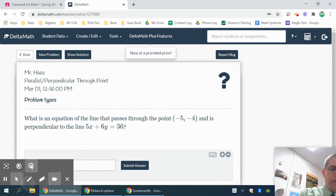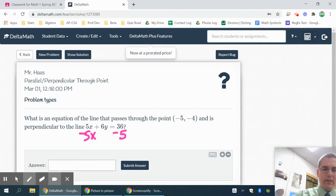Okay, this one, we're looking for a perpendicular line. We still need to get the slope by solving for y. So subtract 5x from both sides. This will help you get better at solving for y, all this practice.